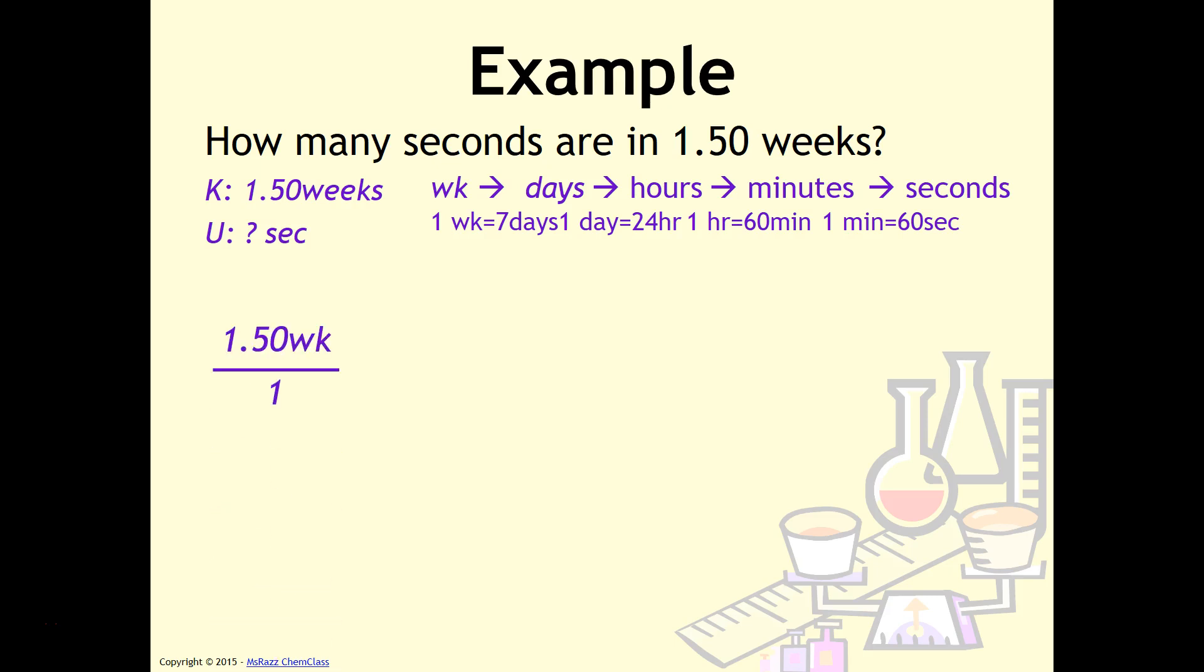I'm then going to start with my known and put it over 1. I'll draw my multiplication sign and my line. And then as I mentioned, the unit that I want to cancel needs to go in the denominator.